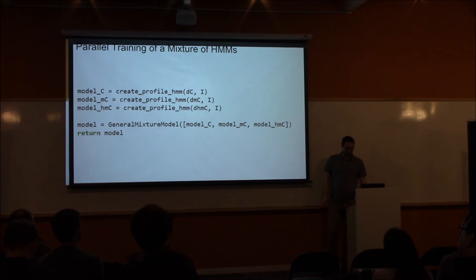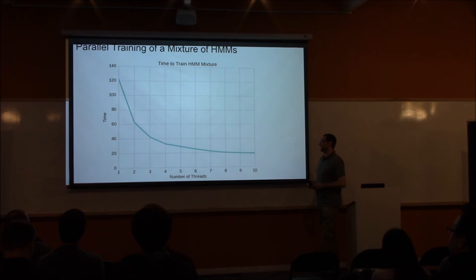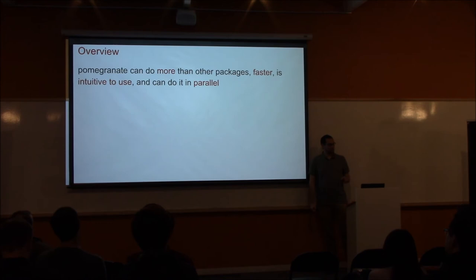Since you have a general mixture model — which is still a distribution, even though it's a very complicated one — you can just call .fit. When you call .fit with an increasing number of threads, you can see the time it takes to train this whole mixture decreases. The reason it doesn't continue going down indefinitely is because I'm using Cython and not C++, so I do have to keep going back and forth between the Cython layer and the Python layer. So, like I said at the beginning: pomegranate can do more than other packages, it can do it faster, it's intuitive to use, and it can do all of this in parallel. Thank you for your time.